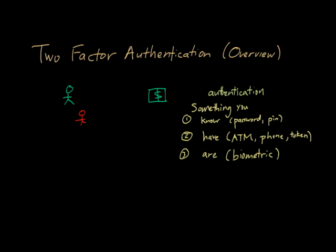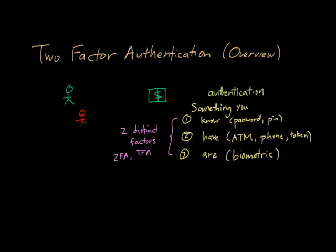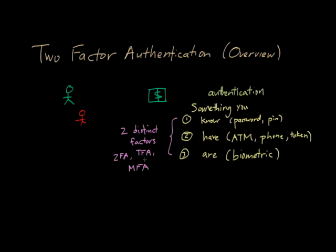When we talk about two-factor authentication, what we really mean is that instead of using just one of these factors, you should use two distinct factors to authenticate yourself — at least two distinct factors. You also sometimes see two-factor authentication abbreviated as 2FA or TFA. Sometimes you also hear about multi-factor authentication, MFA. Although MFA could mean more than two factors, when we talk about two-factor authentication we typically mean exactly two factors.